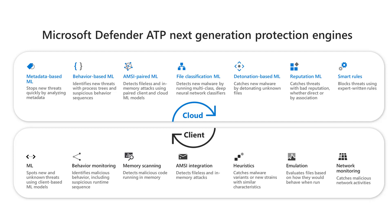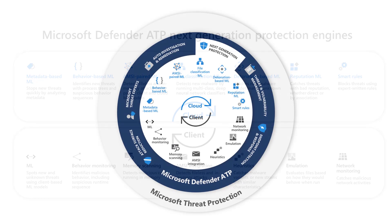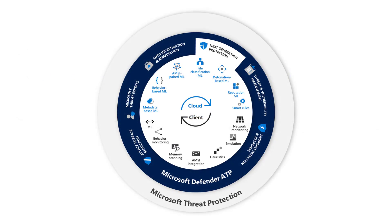There's a lot happening at both the cloud and client levels. Together with attack surface reduction — composed of advanced capabilities like hardware isolation, application control, exploit protection, network protection, controlled folder access, attack surface reduction rules, and network firewall — these next generation protection engines deliver Defender ATP's pre-breach capabilities, stopping attacks before they can infiltrate devices and compromise networks.